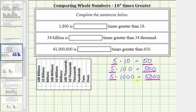Going back to our sentences, we need to determine: 1,800 is how many times greater than 18? To answer this question, we need to determine what we have to multiply 18 by in order to get 1,800.